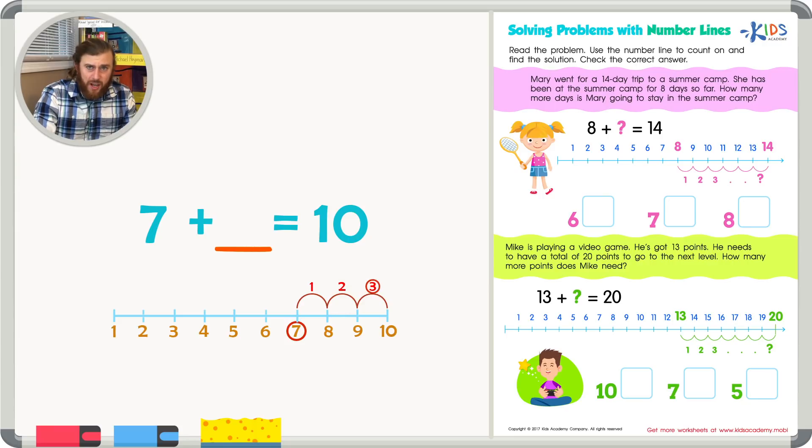So it took us 3 times or adding 3 plus 7 to get to 10. So the missing number is 3. And that makes a good number sentence. 7 plus 3 equals 10. Let's use this counting on strategy to help us solve these word problems.